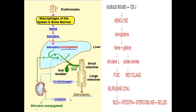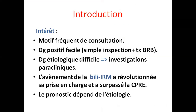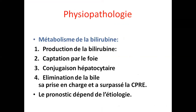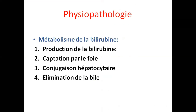Sur le plan physiopathologique, le diagnostic positif est facile — il suffit de voir le visage du malade. Toute la difficulté, c'est de savoir d'où vient cet ictère : c'est l'étiologie qui est difficile. La bili-IRM nous a beaucoup facilité la tâche. Le pronostic dépend de l'étiologie : il peut être sévère si c'est un cancer du pancréas comprimant les voies biliaires, ou bénin si c'est une hépatite A aiguë. On va faire un rappel sur le métabolisme de la bilirubine : production, captation par le foie, conjugaison par la glucuronyl transférase, et élimination par les voies biliaires.